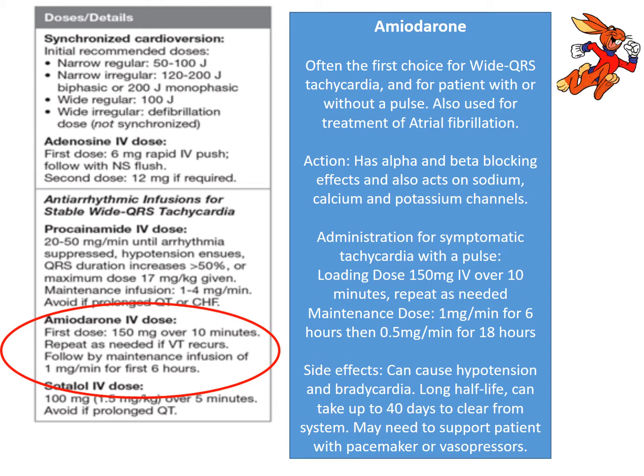Administration for symptomatic tachycardia with a pulse: give a loading dose of 150 milligrams over 10 minutes. Amiodarone can be tricky to mix — if you're a new nurse giving it for the first time, make sure you have someone working with you. Then a maintenance dose of one milligram per minute for six hours, followed by half a milligram per minute for 18 hours. It has a very long half-life. Since we're giving it to slow the heart rate, it can cause bradycardia and severe hypotension — you may need to support the patient with a pacemaker or vasopressors afterward.